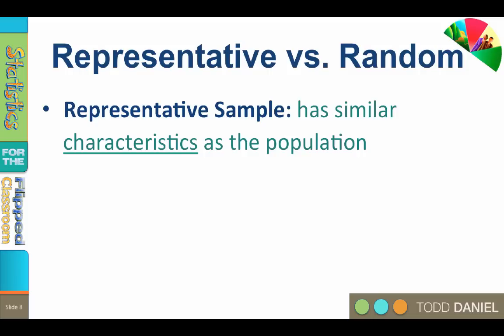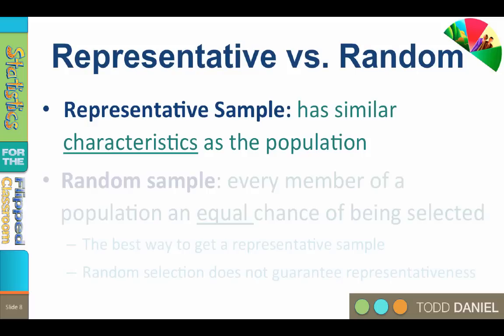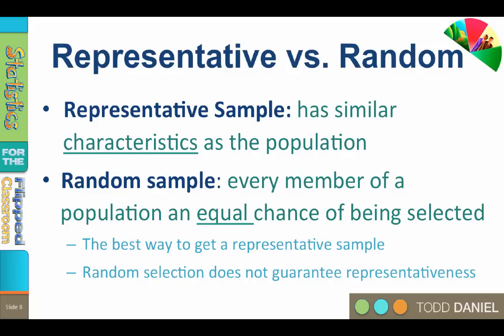The best way to get a representative sample is to use a random sample. However, a random sample does not guarantee a representative sample. A sample is random when every member of the population has an equal chance of being selected, and the random sample is randomly selected from a larger population of subjects.